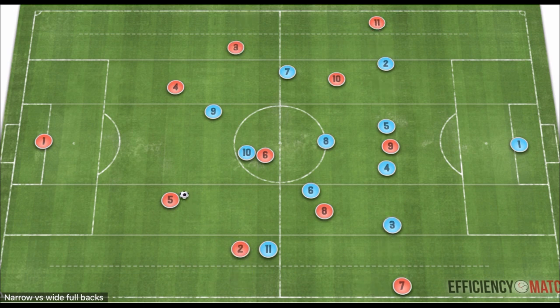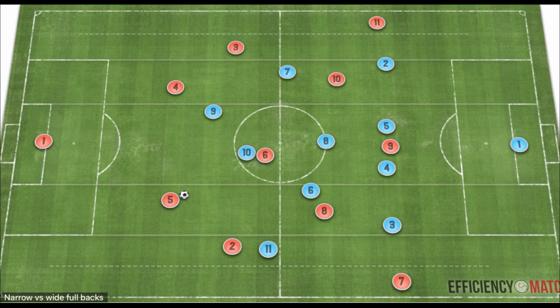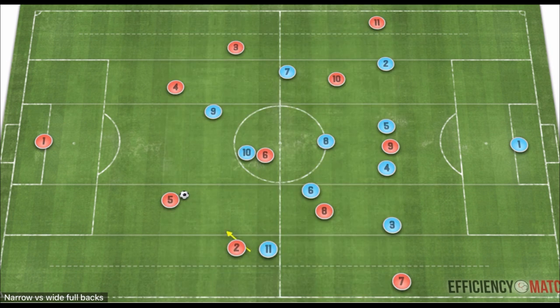Now we're going to look at narrow fullbacks with wide wingers. Notice we've separated the wide corridor with a dotted line as a reference point for the positioning and staggering. Julian Nagelsmann uses this exact separation in the wide area — the inside part of the wide corridor versus the outer part. With a narrow fullback, we can see right away that the connections to teammates are much smaller, making it easier, and we have one added diagonal passing option into the wide area.